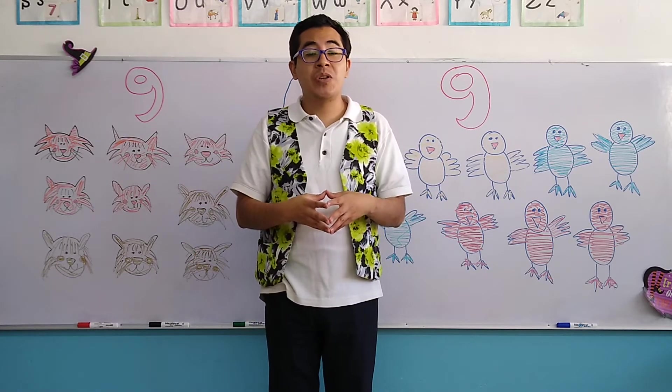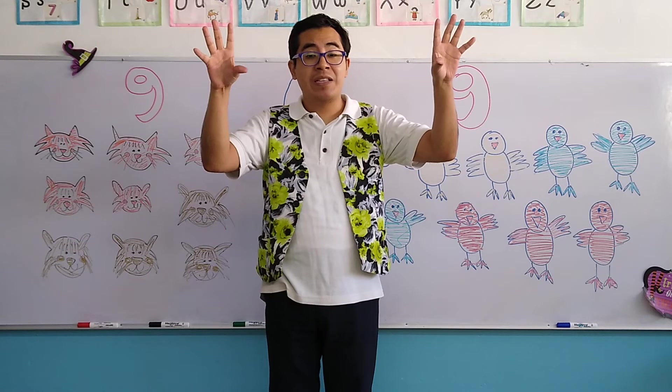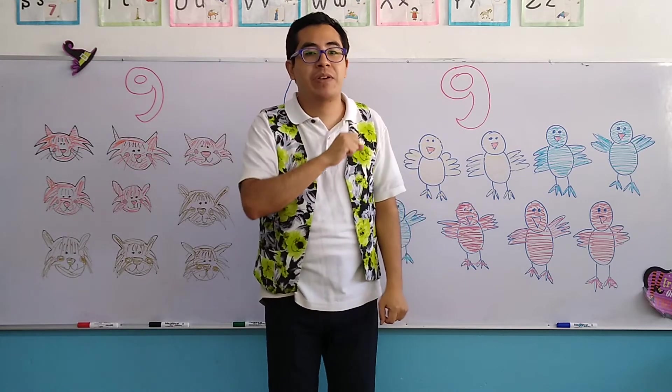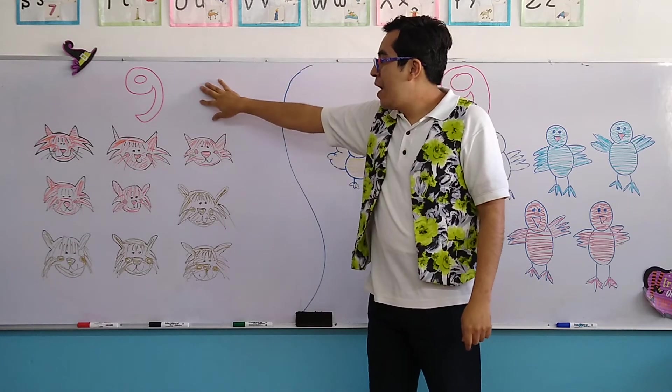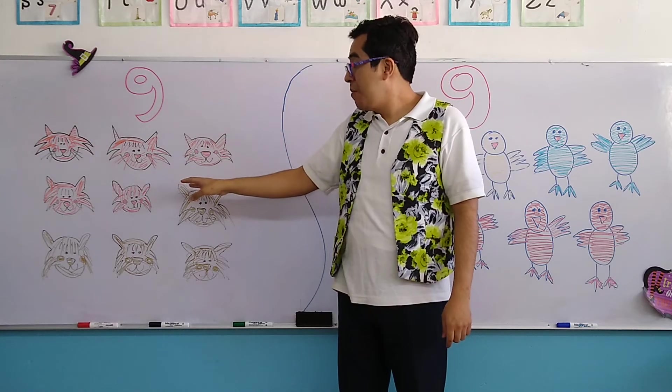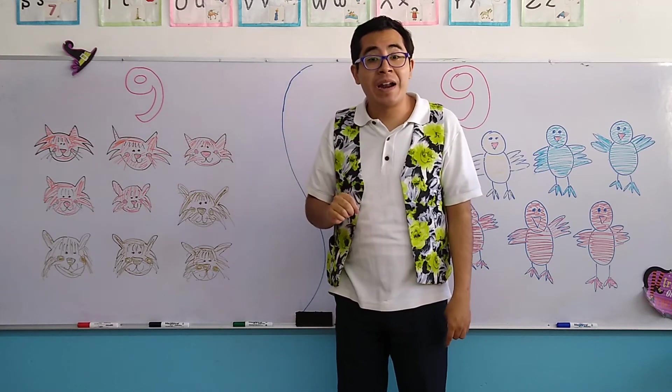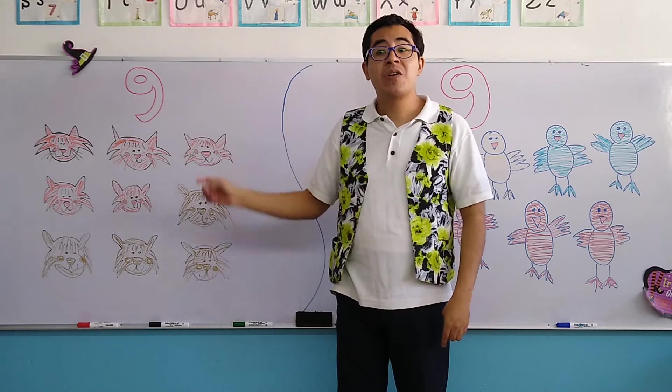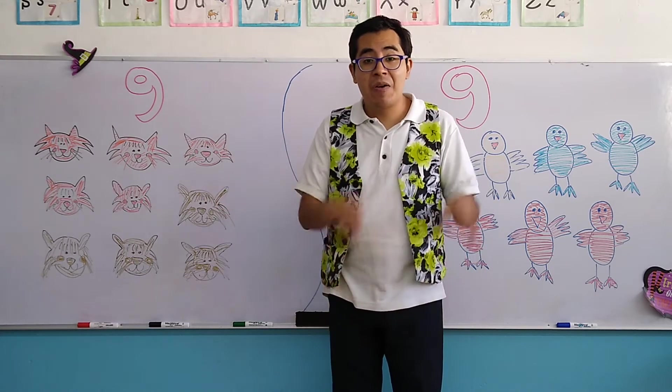Today we are going to continue with the number 9 and animal. So let's start with the class. Number 9, remember it looks like a balloon. And under the number we have an animal. The animal of today we have cats.